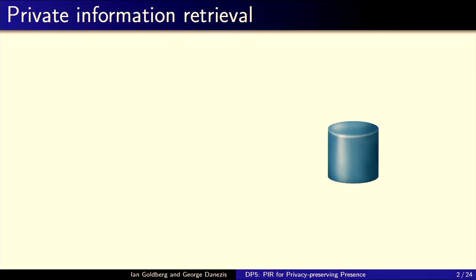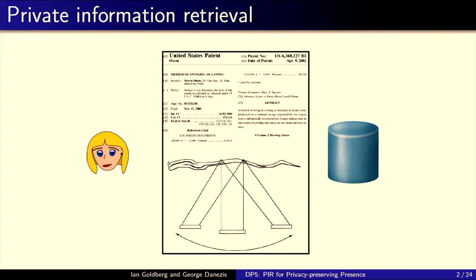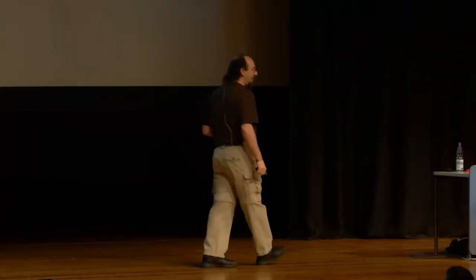Stell dir eine Online-Datenbank vor. Es gibt einen Haufen Online-Datenbanken. Zum Beispiel eine Patent-Datenbank. In den USA gibt es Patente — stellen wir uns vor, eine Forscherin will das Patent 62667 abrufen: das Patent auf das Schwingen einer Schaukel. Das ist ein echtes Patent, das zurückgezogen worden ist wegen Dummheit, aber es wurde zuerst ausgegeben. Sie möchte dieses Patent herausfinden, aber möchte nicht, dass die Datenbank weiß, dass Schaukeln ein heißes neues Forschungsthema sind.